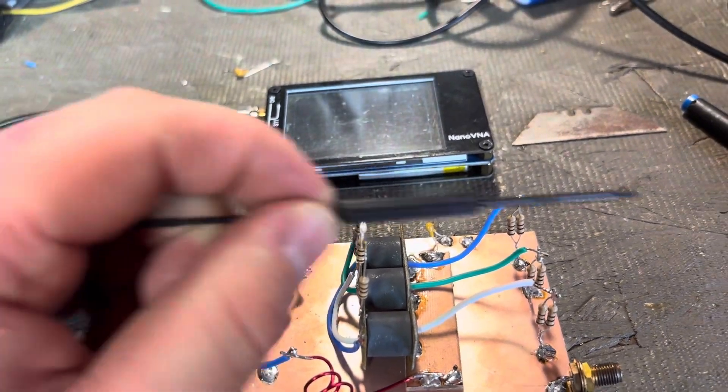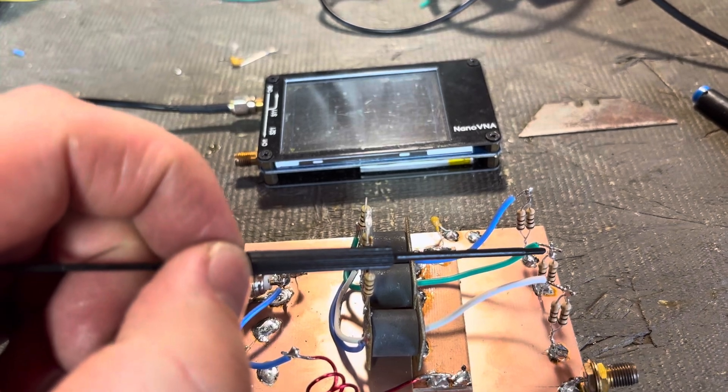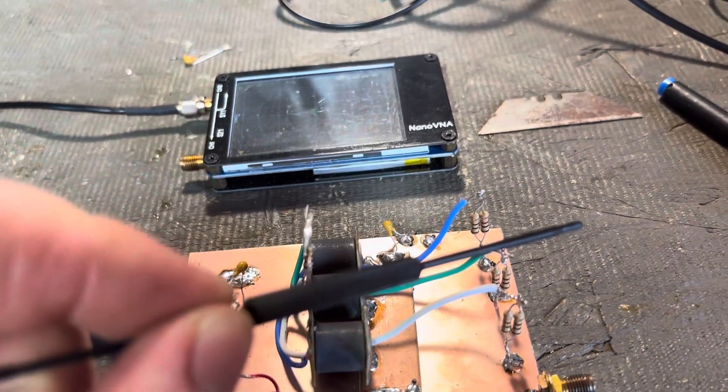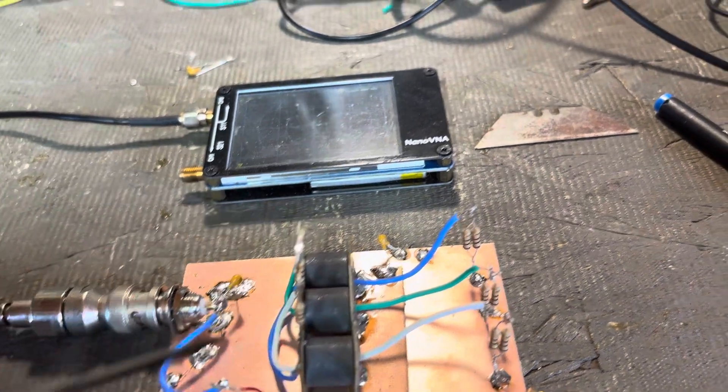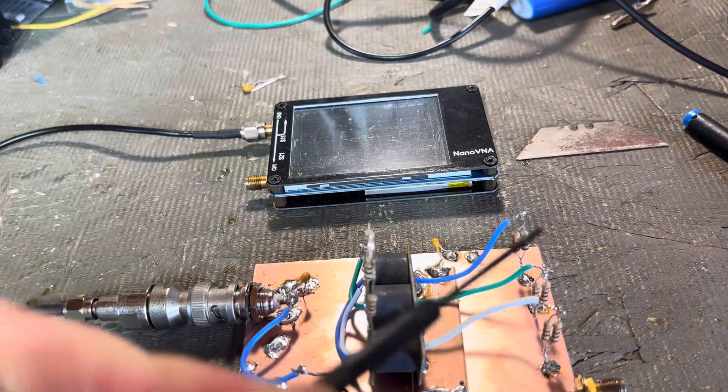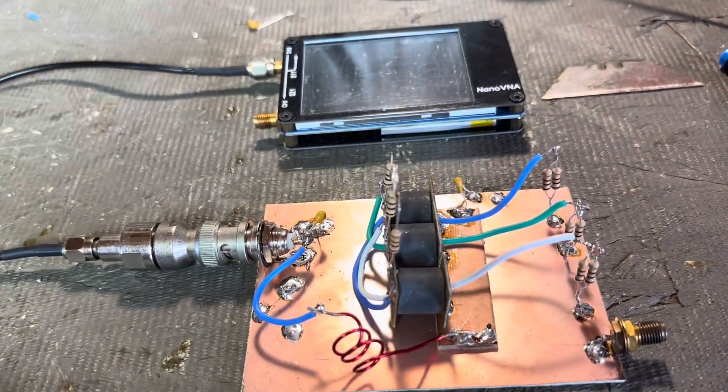So this is your 50 ohm input to your amplifier. You would have an amplifier here, an amplifier here, and an amplifier here with the input impedance of 50 ohms. So you have one 50 ohm source driving three 50 ohm sources.